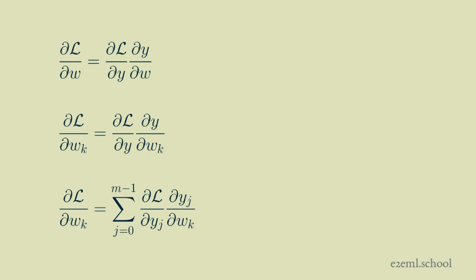That gets us halfway there. The other quantity we have to be able to calculate is our weight gradient. The weight gradient is especially important because it tells us what direction and how much to adjust each of the weights — each of the values in our kernel — to get a better result, to decrease the loss, to climb down the loss gradient.